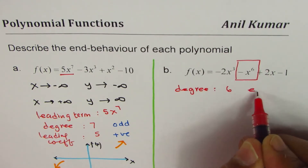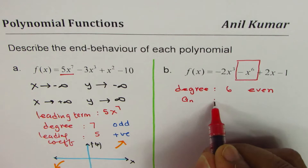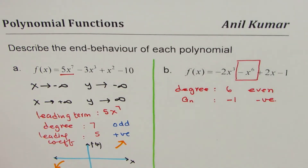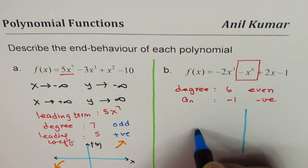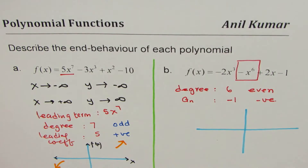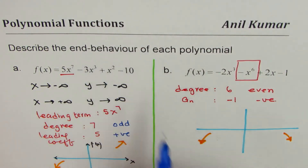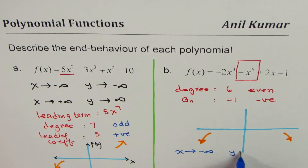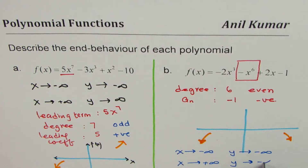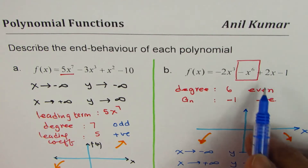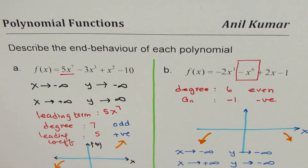The degree is 6, which is even, and the leading coefficient is −1, which is negative. If that is the case, the graph will have the right side down because the leading coefficient is negative, and even degree means same ends. We can summarize the end behavior as: when x approaches negative infinity, y approaches negative infinity, and when x approaches positive infinity, y approaches negative infinity. Both ends are on the same side when the degree is even.